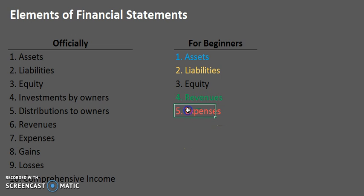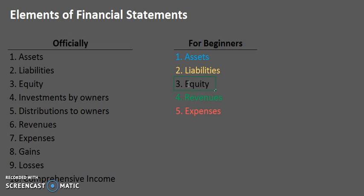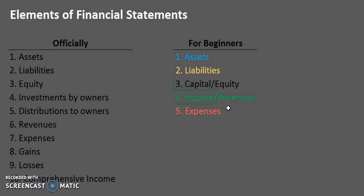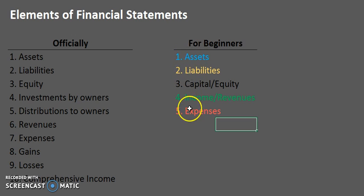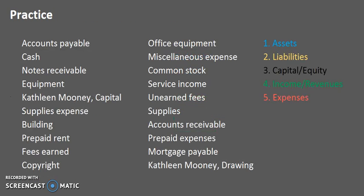Before we go on to practice, keep in mind that some of these words have other terms that apply to them. Another very common way of saying equity is 'capital,' so those are interchangeable. Similarly, another term for revenues is 'income.' With these terms we can create a nice acronym: A, L, C, I, E — Assets, Liabilities, Capital, Income, Expenses — a handy way to remember your five accounting terms. Now let's go to the practice sheet and apply them.